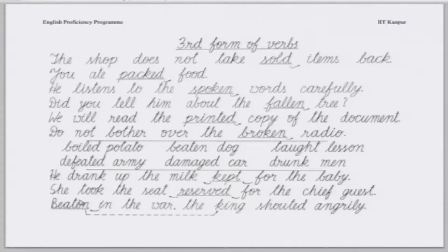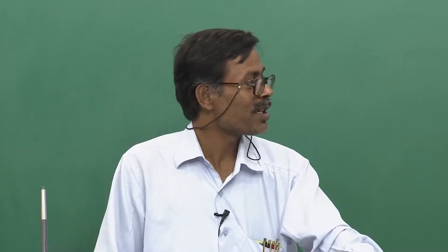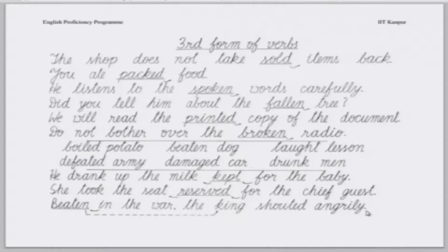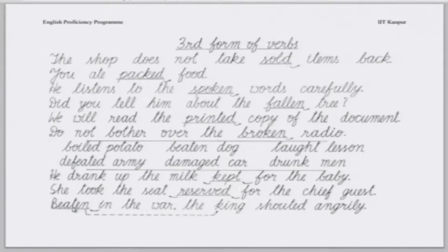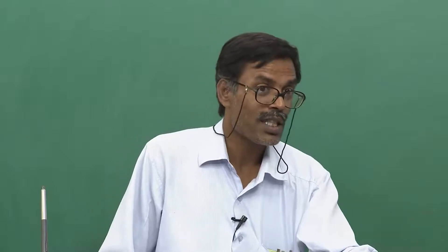This is a more complicated example: 'Beaten in the war, the king shouted angrily.' — 'Larai me hare hue, raja ne zor se chillaya.' Which king? The beaten king. Here 'beaten' qualifies 'the king,' but 'beaten' comes far from the king with a comma, and everything — 'beaten in the war' — comes before. The adjective 'beaten' has a verb-like relationship with the phrase 'in the war,' while it qualifies 'the king.'